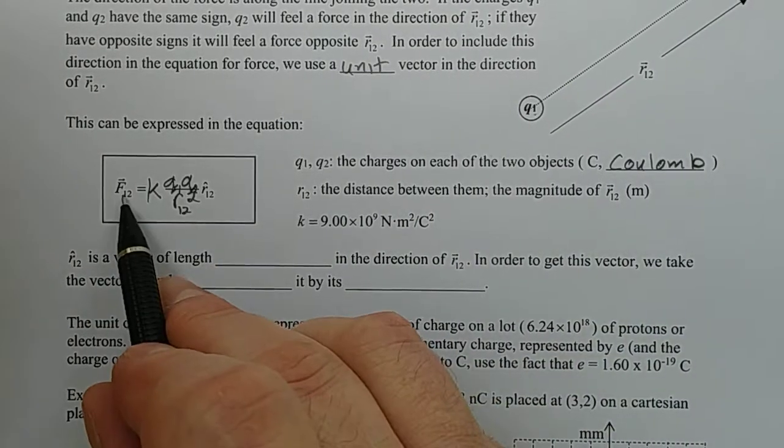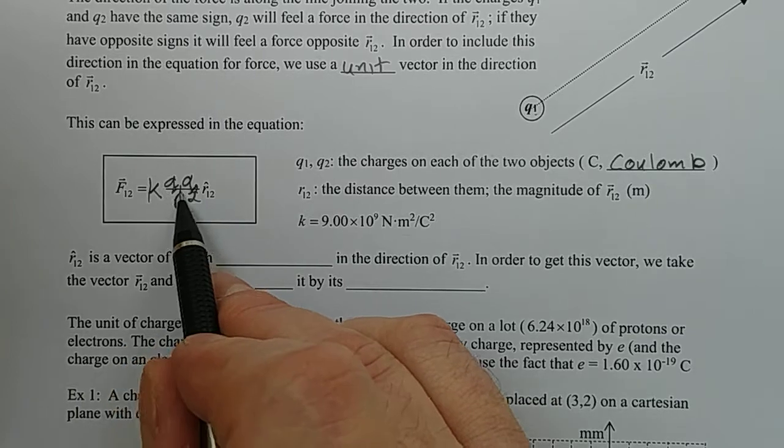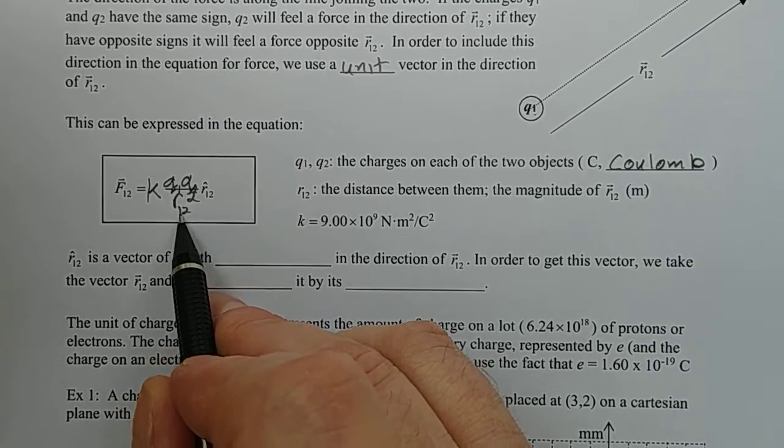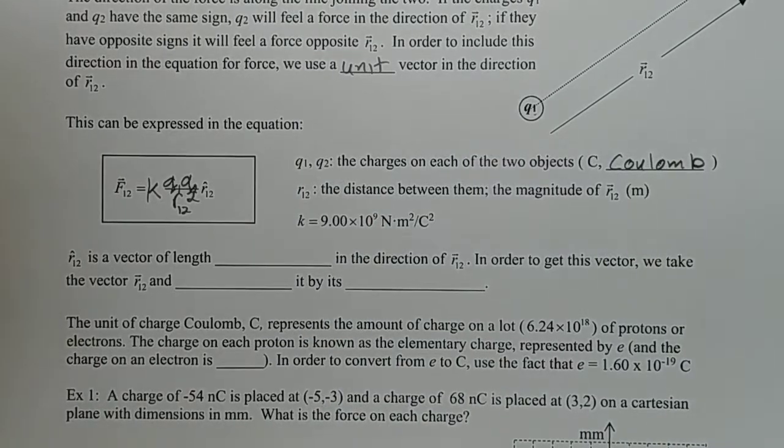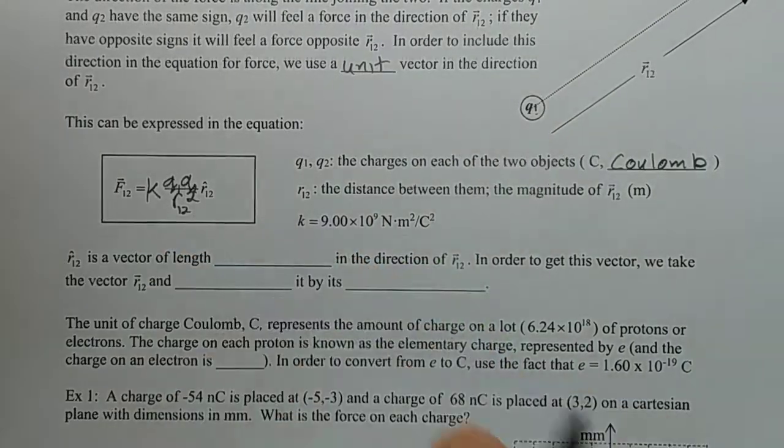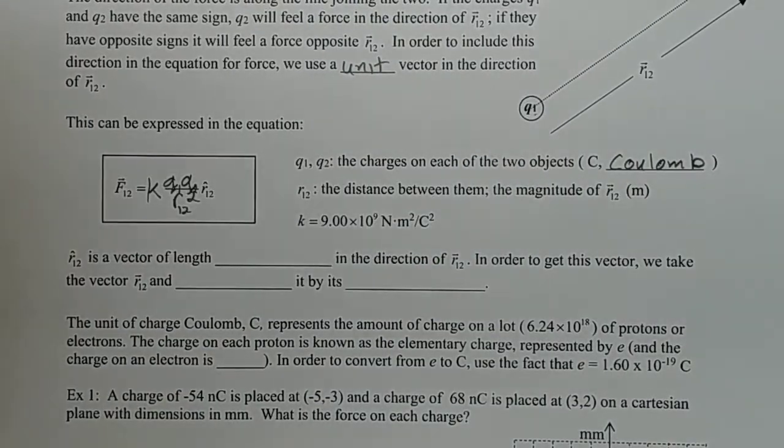This looks a lot like gravity. The force of gravity is capital G times M1 M2 over R squared. And it has a direction which we probably didn't go with when we dealt with that in mechanics. But this same formula format could be used for gravity as well.